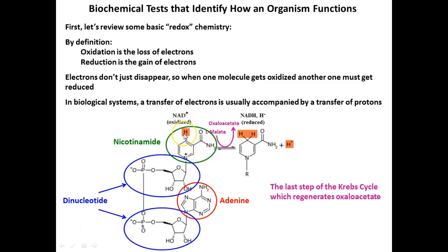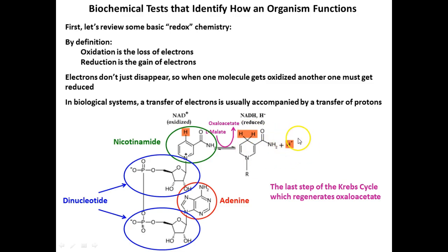This molecule can pick up electrons. When it does, it also picks up a hydrogen ion, so it becomes NADH. NAD⁺ is positive — it's lacking electrons. It gains electrons and becomes neutralized, also gaining a hydrogen ion. You can see the additional hydrogen, and it also produces an extra proton.